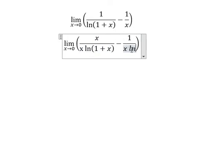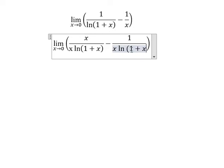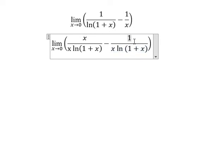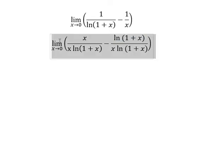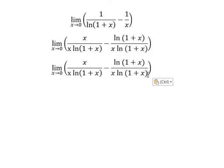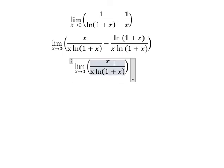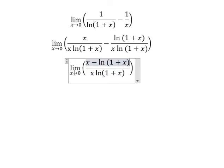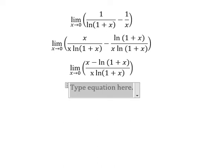...by ln(1+S) on numerator and denominator. Now we combine the two fractions. When we put S approaching zero, here, here, here, and here, we will have zero over zero.